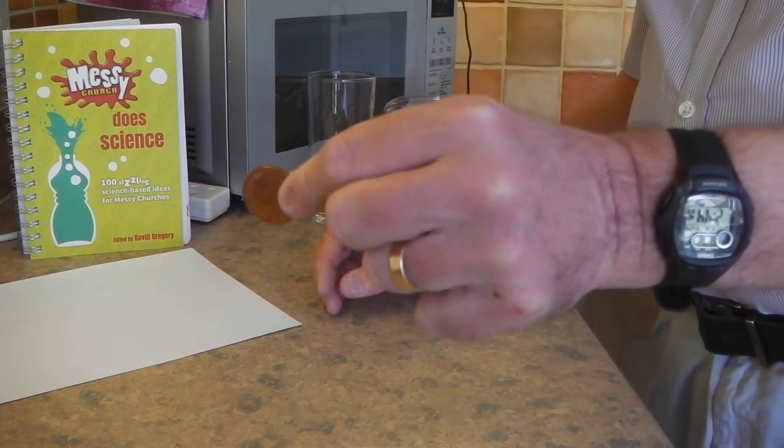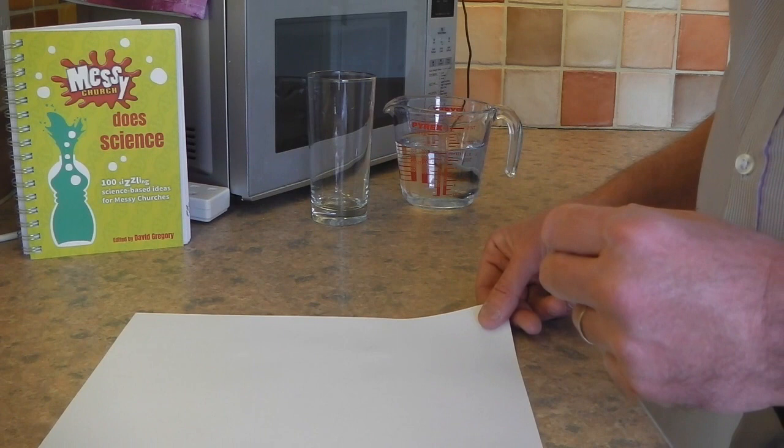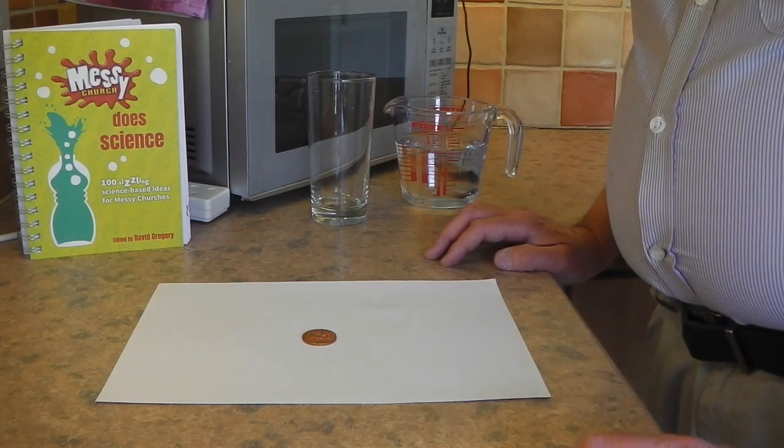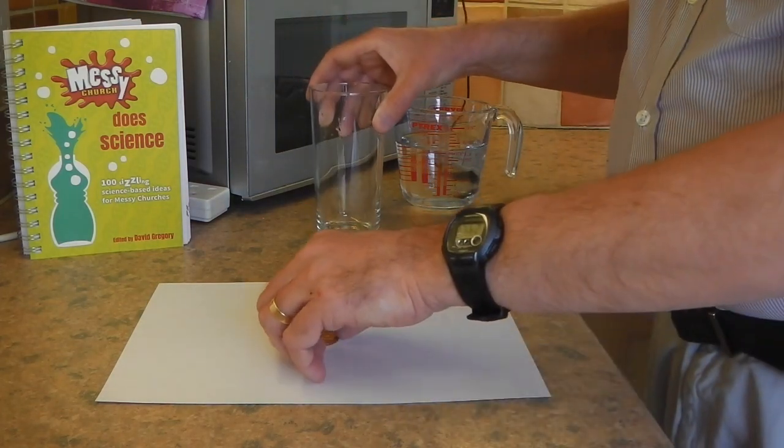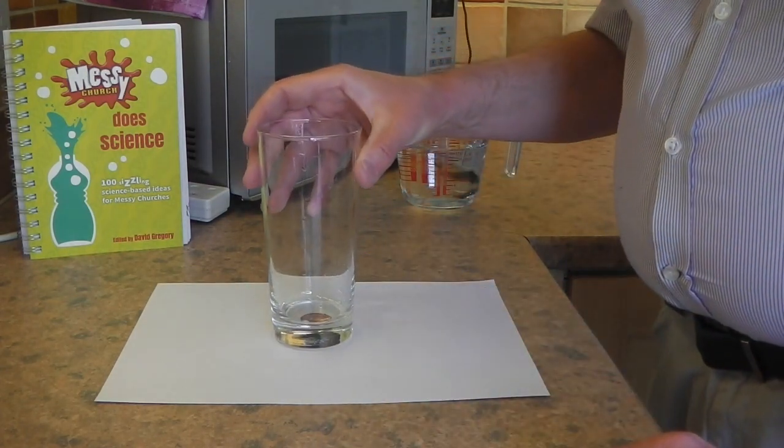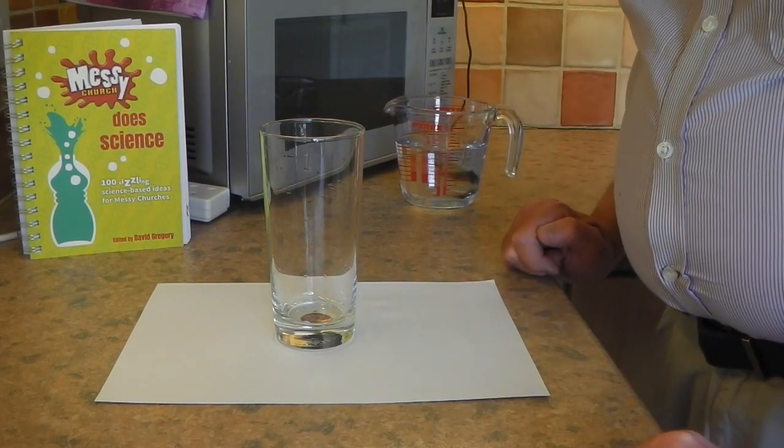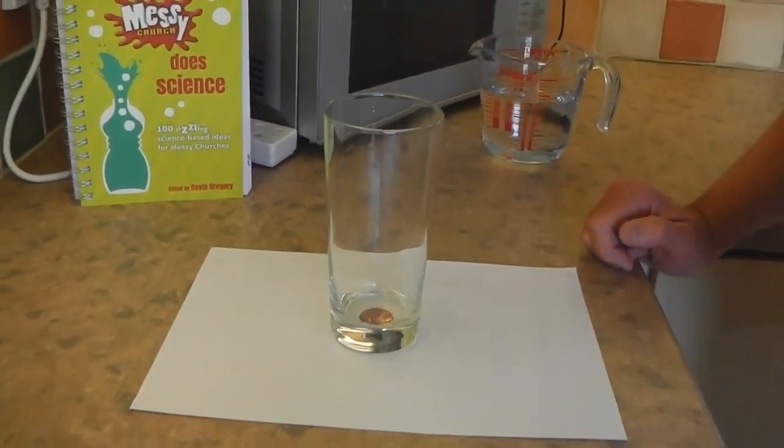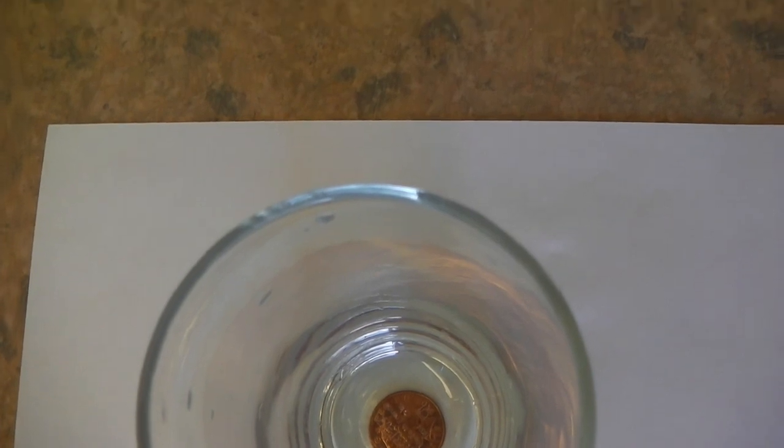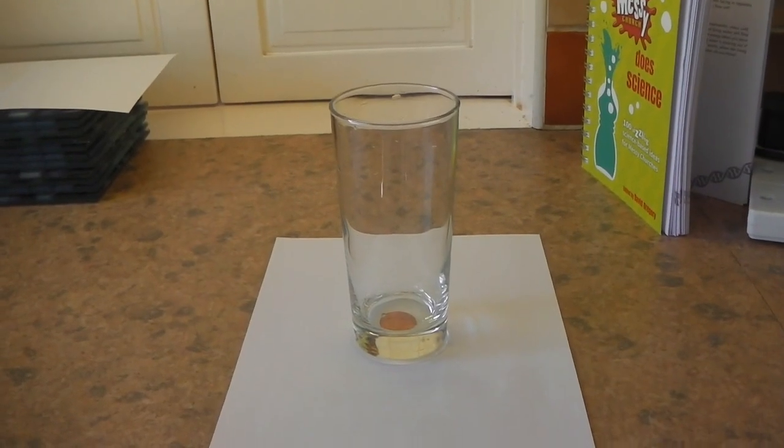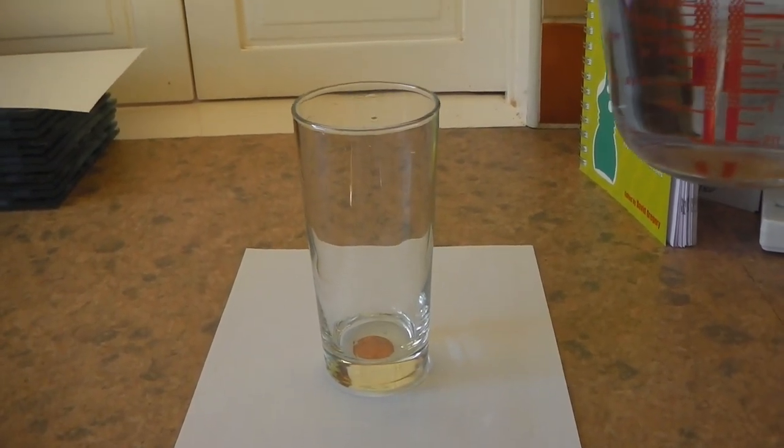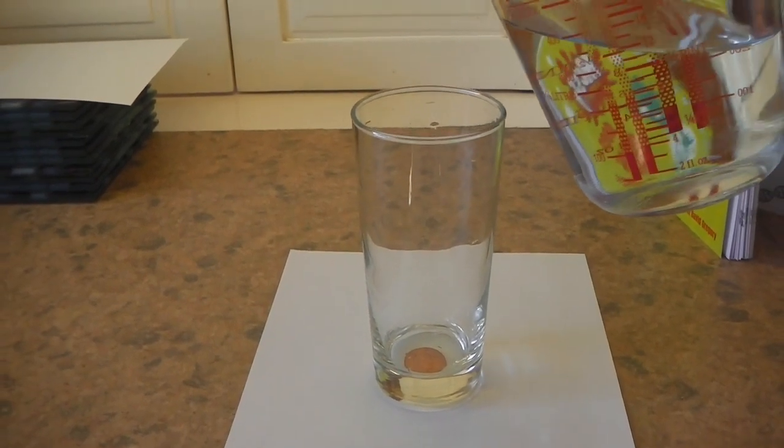So take your 2p coin and put it on the centre of the piece of paper. And then we'll turn it over so the queen's head is facing up. And then we put the glass of water on top. If I take the camera in my hand, you can see the 2p piece sitting at the bottom of the glass. Now I'm going to take the jug of water, I'm going to pour it into the glass. And watch what happens to the 2p coin as I do it.